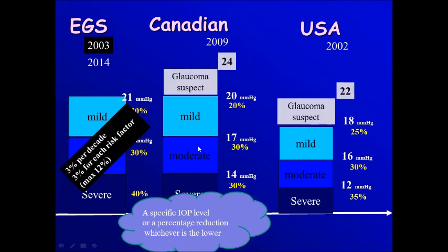If we come to glaucoma suspect, the Canadians will go for a pressure below 24, and the American target pressure is below 22.